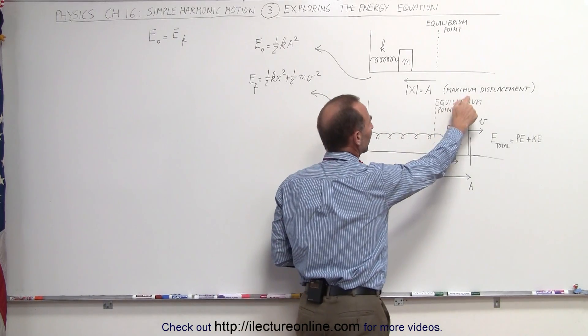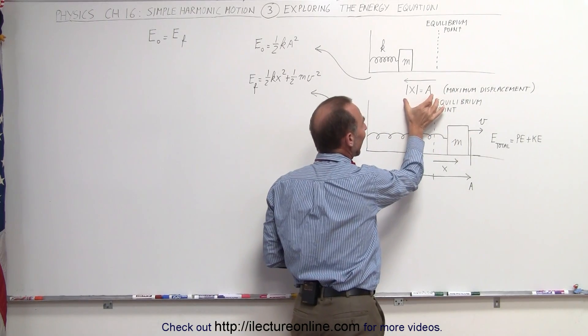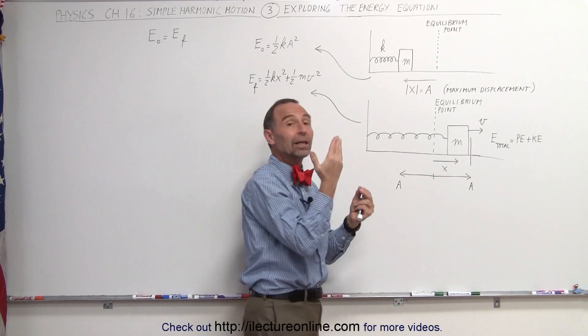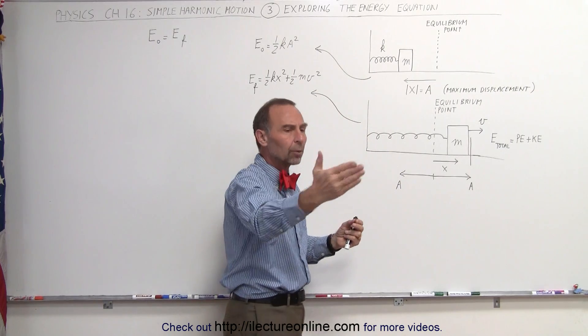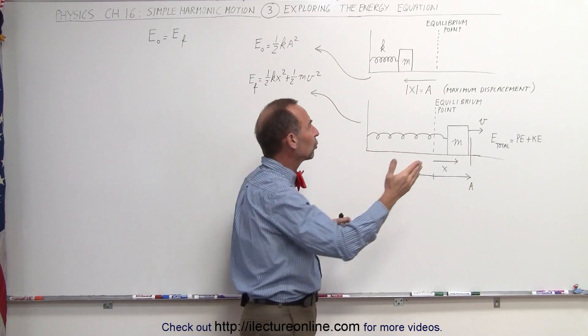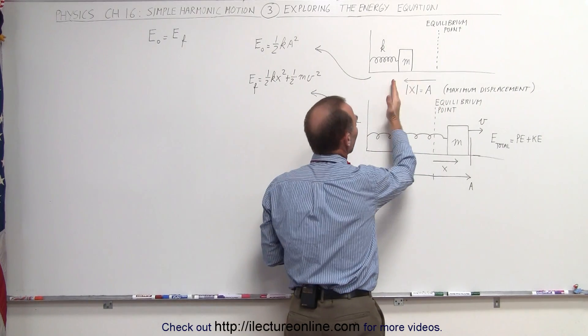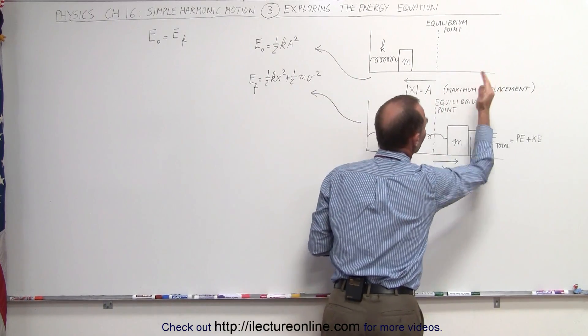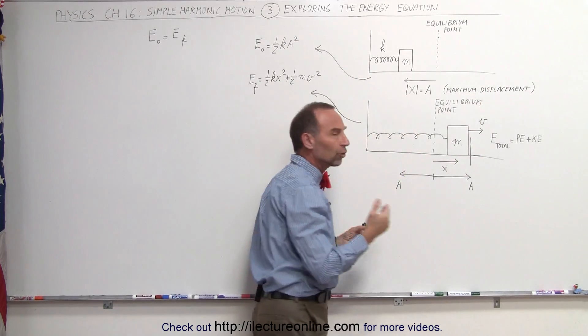We call the maximum displacement the amplitude of the oscillation, because once we let go, the block will oscillate between negative A on one side to positive A on the other side.